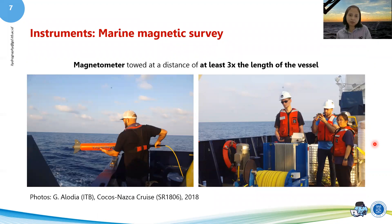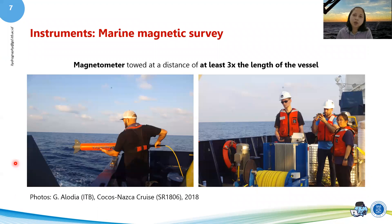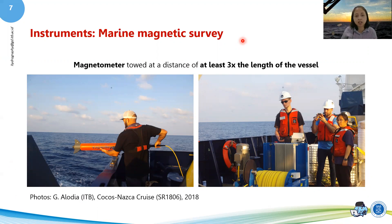Now we are talking about the instrument. Marine magnetic survey is simpler than gravity survey because there are not as many corrections needed. The only corrections required are inclination and declination, which are published every five years and freely available. The magnetometer is towed at a distance of at least three times the vessel length — so for a 100-meter vessel, you tow it about 300 meters behind.